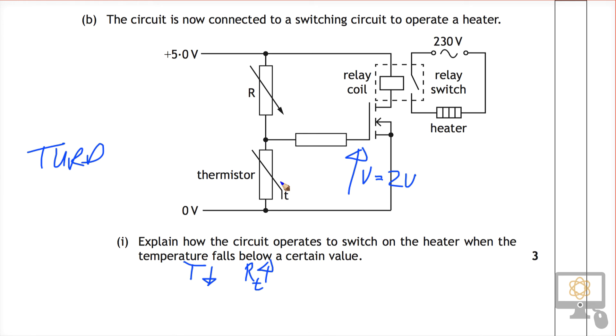And so as that thermistor rises in resistance, the voltage share that it will have also rises, and eventually it will rise above the 2 volt threshold required to switch on the MOSFET. And so the second statement really relates to the MOSFET turning on. And so we could say MOSFET turns on when 2 volts across it.